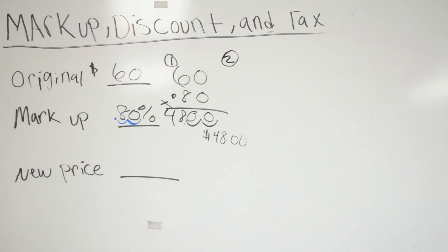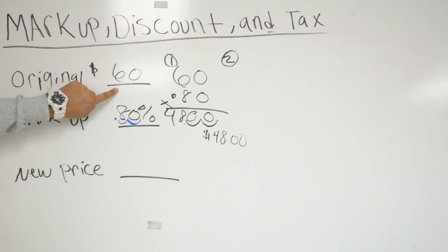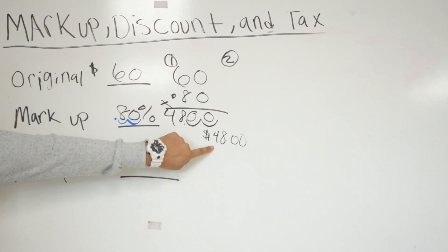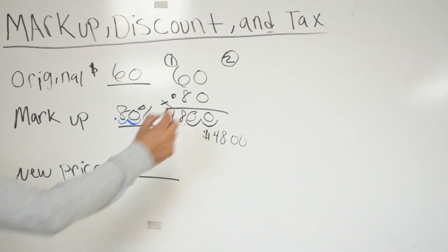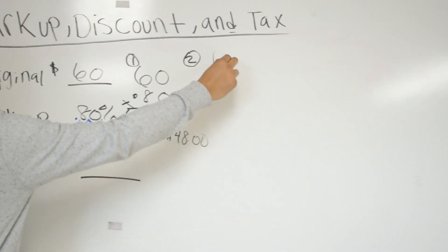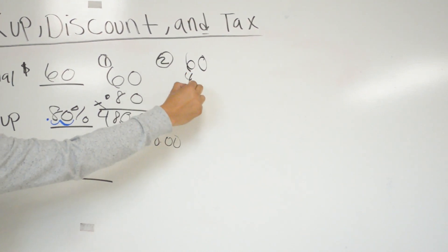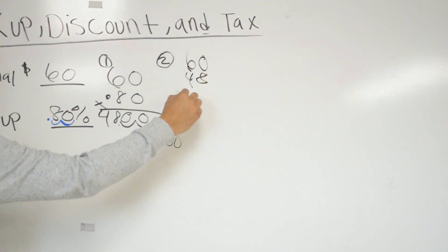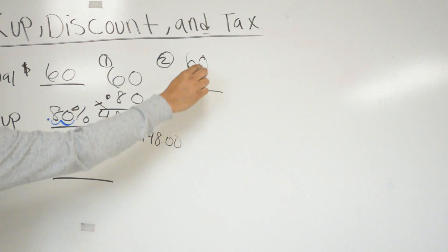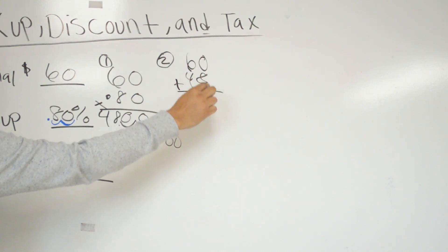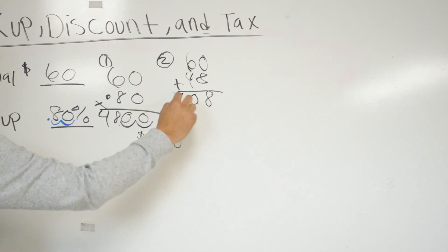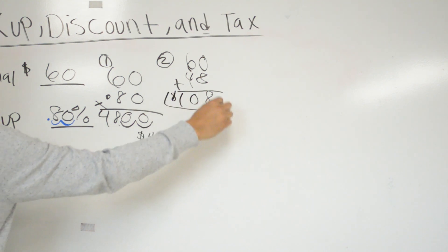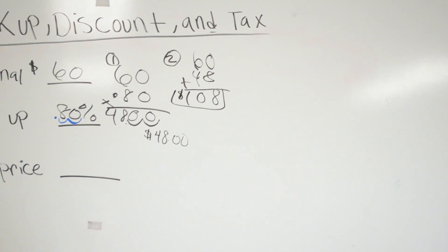Step two: we're going to add the original price, which is $60, plus the markup, which is $48. So 60 plus 48: 0 plus 8 is 8, and 6 plus 4 is 10 — so the final price is $108.